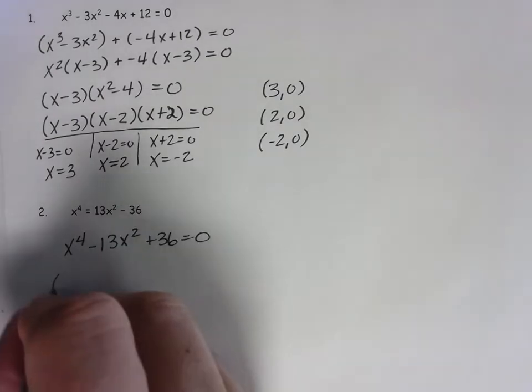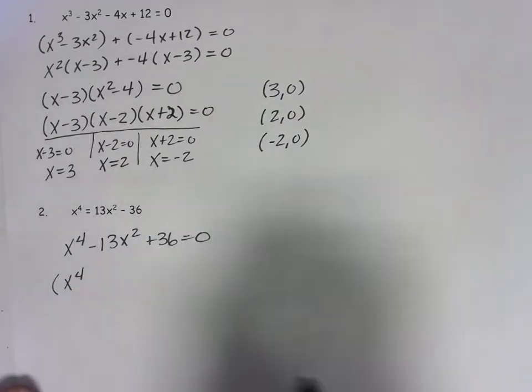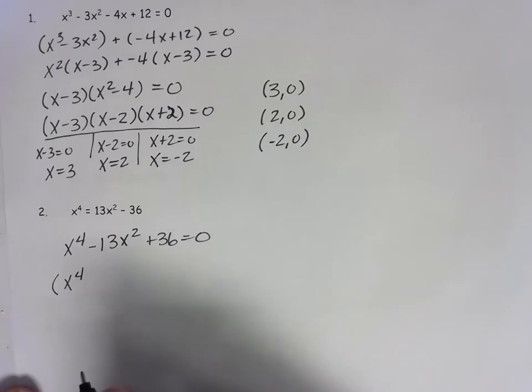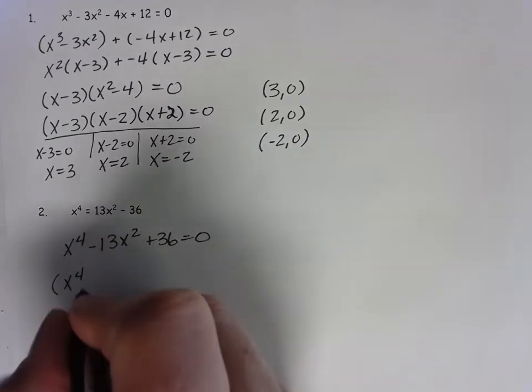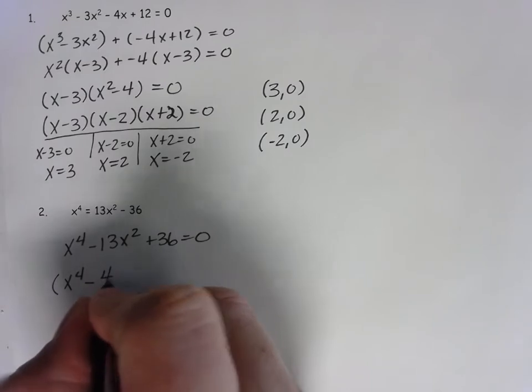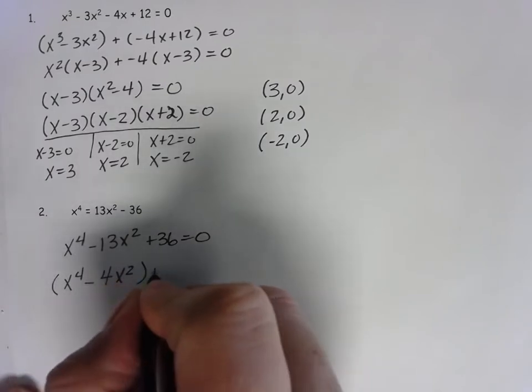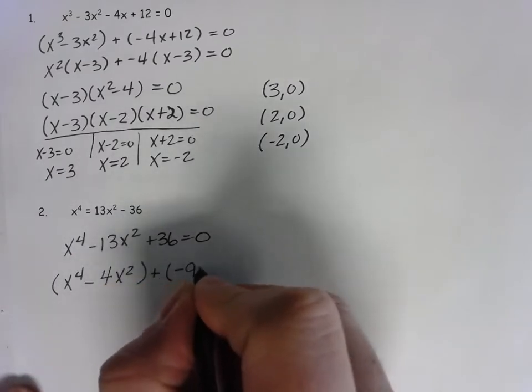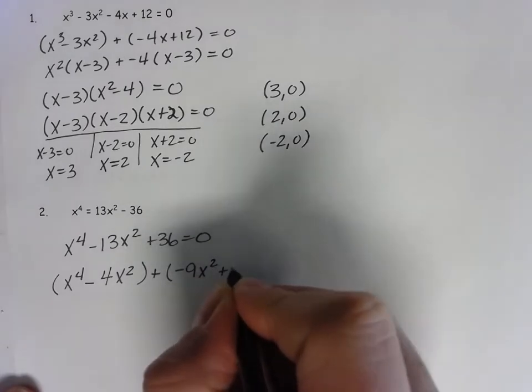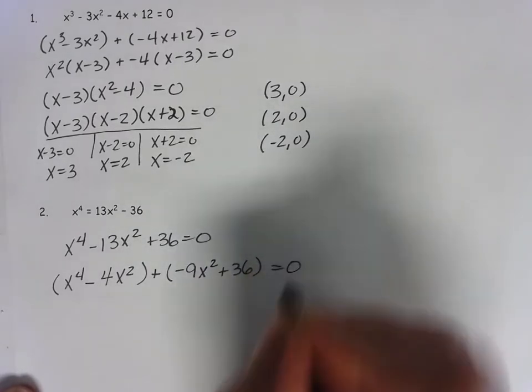Let's factor this. Well, this becomes x to the 4th. Two numbers whose product is 36 and added to make negative 13, it would be negative 4 and negative 9. So let's go minus 4x squared plus negative 9x squared plus 36 equals 0.